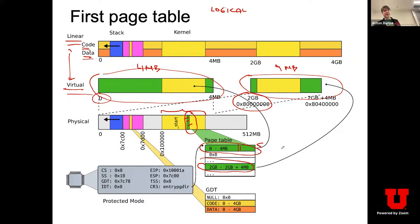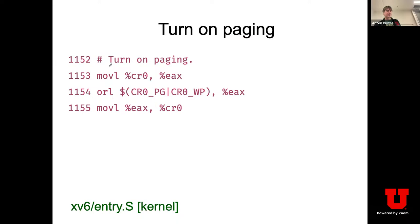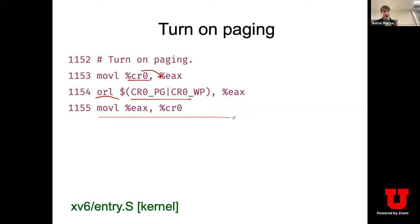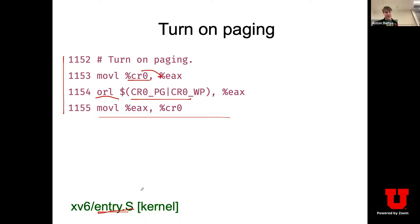You cannot do an OR instruction directly on the CR0 register. That's why you first copy CR0 into EAX, set the two flags to enable the page table, then move it back into CR0. At that point paging is enabled and the page table will be used for all subsequent address translations.